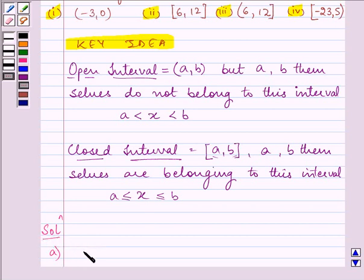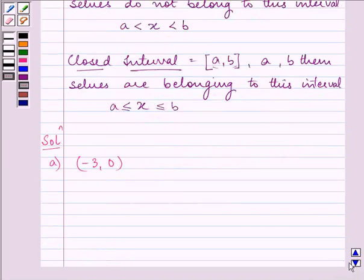So first of all we are given (-3, 0) and it is an open interval. So we need to write them in set-builder form. So it will be X such that X belongs to real numbers, and X is greater than -3 but less than 0. Because here we have written only greater than or less than sign but not an equality sign, because it was an open interval question.